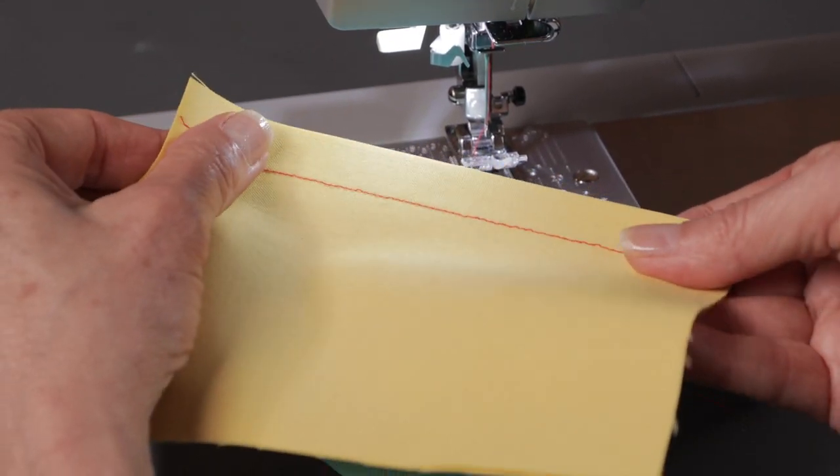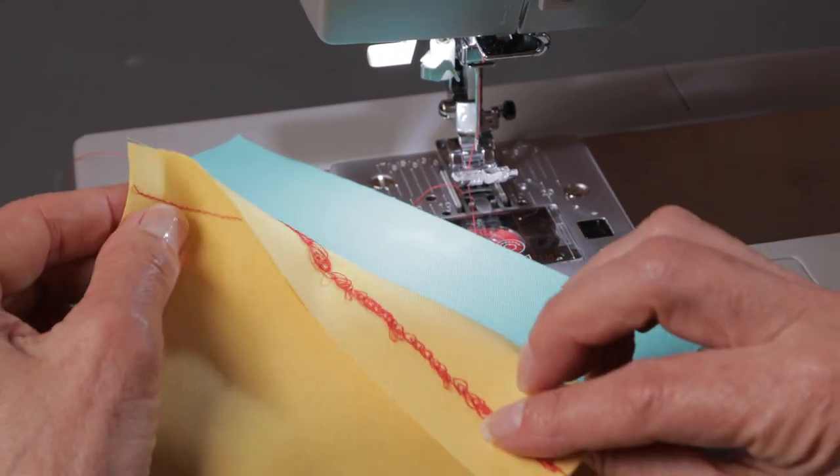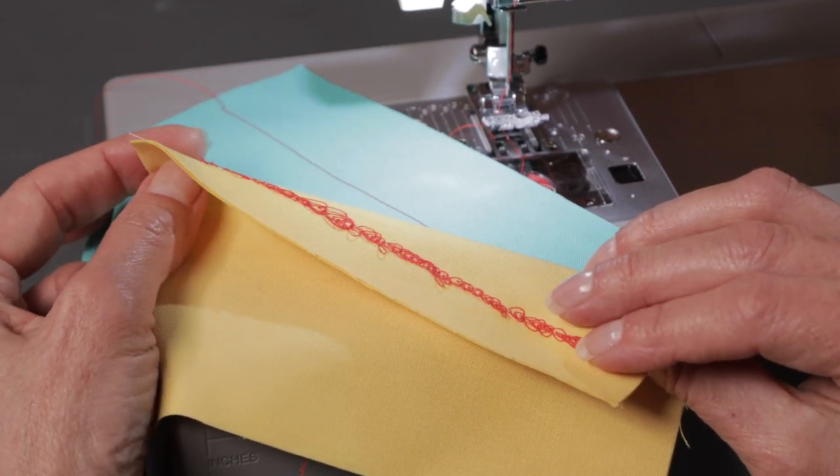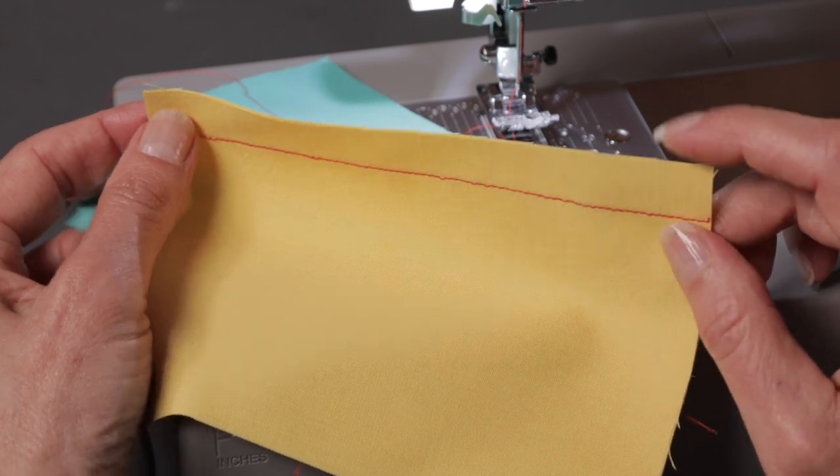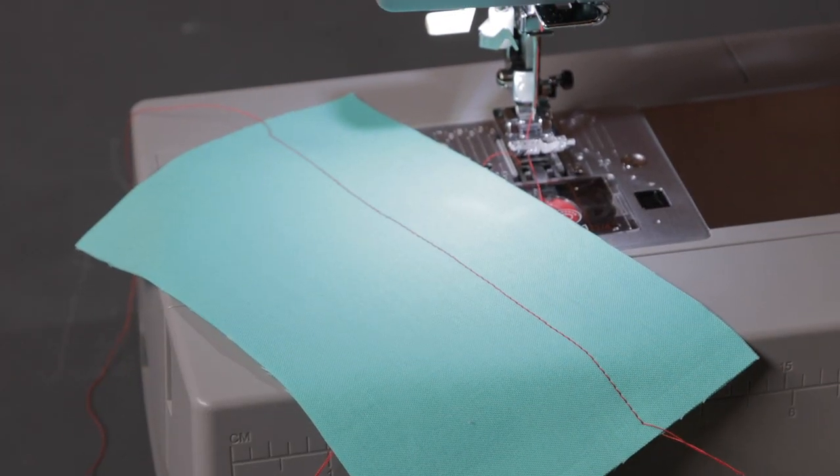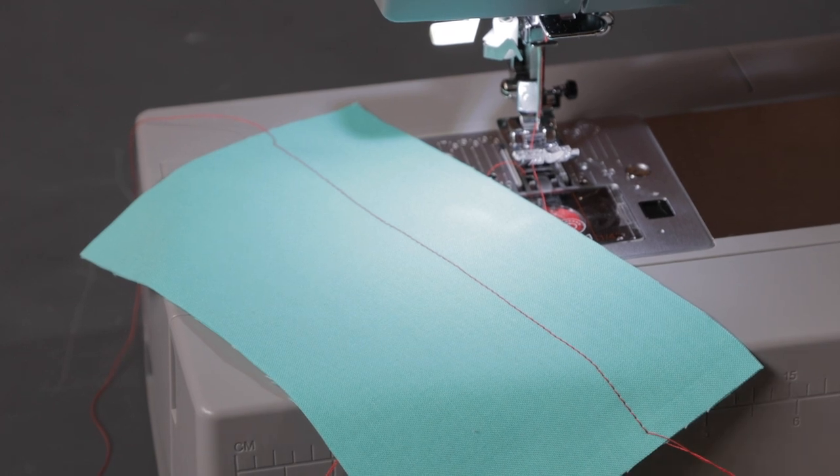When you sew, if it seems okay on the top, but when you turn it over it looks like there are a lot of thread loops, a lot of excess thread, a lot of looping and bunching, that's actually an indication that the top of the machine was threaded incorrectly. So just remove the thread from the top threading path and re-thread the machine.